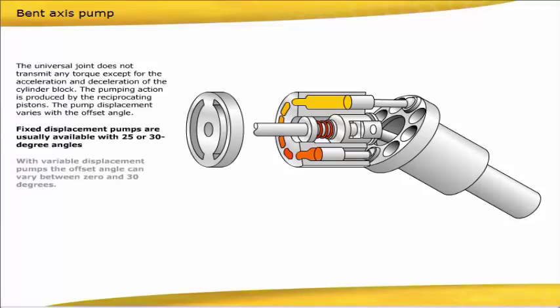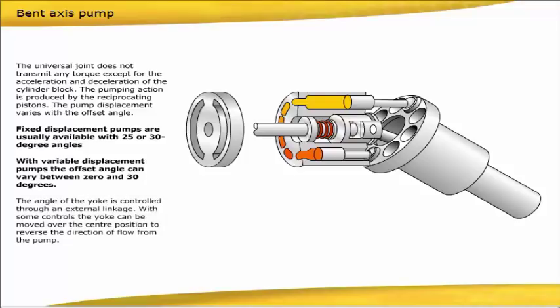Fixed displacement pumps are usually available with 25 or 30 degree angles. With variable displacement pumps, the offset angle can vary between 0 and 30 degrees. The angle of the yoke is controlled through an external linkage. With some controls, the yoke can be moved over the center position to reverse the direction of flow from the pump.